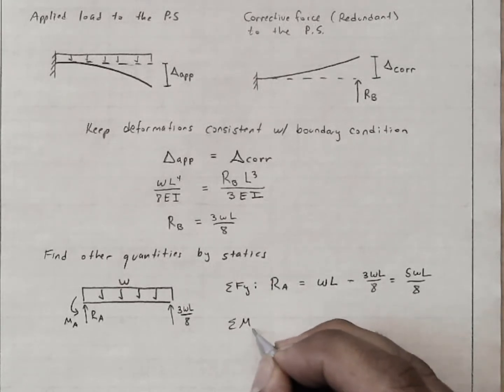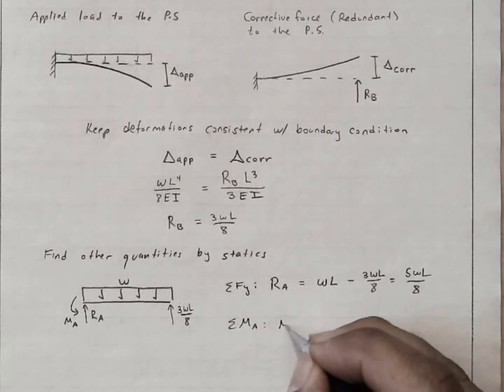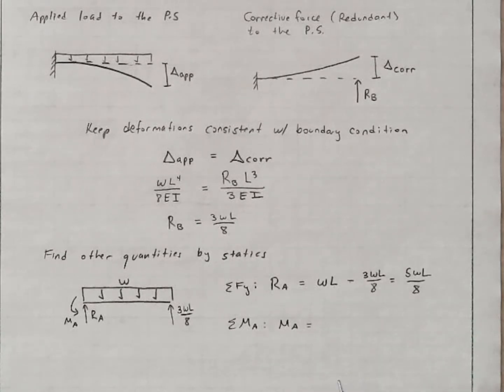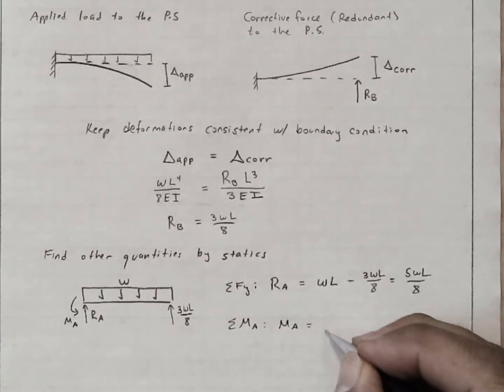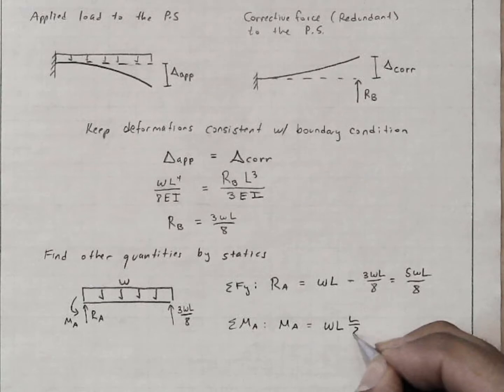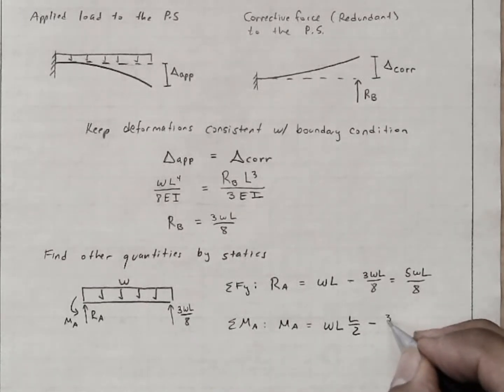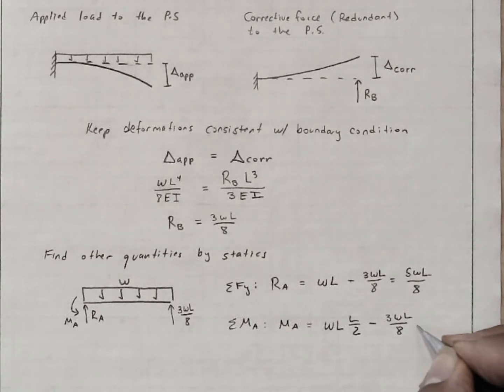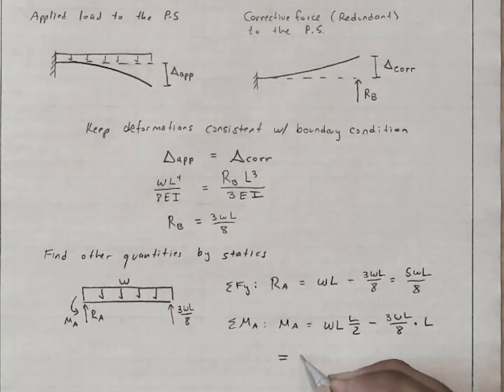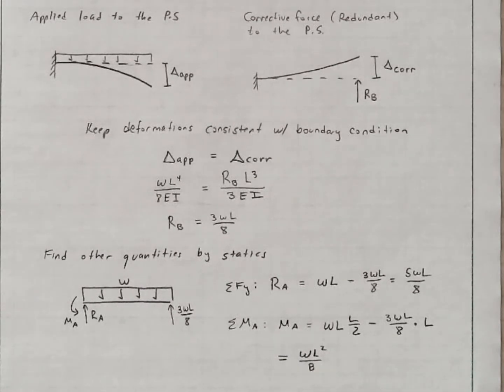I can sum moments about end A. And that would tell me that M sub A is equal to the resultant of this force, WL, times the location of that resultant, midway, minus the moment due to this force, 3WL over 8, times the moment arm, this moment is equal to WL squared over 8.